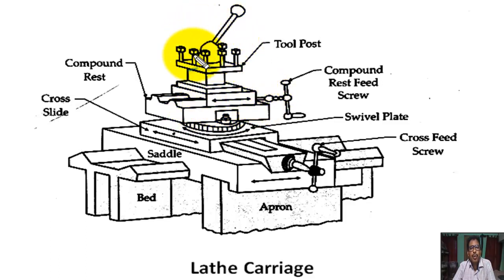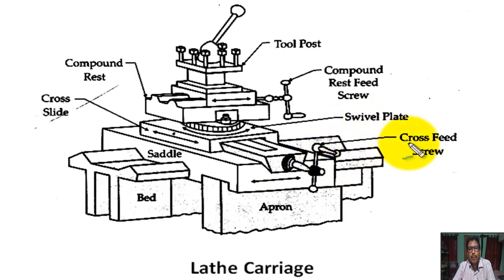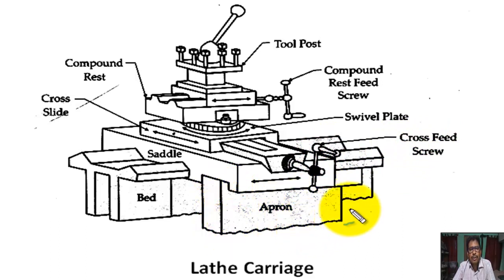This is called the tool post. This is the compound rest feed screw. This graduated plate is called the swivel plate. This is the cross feed screw. The hanging portion of the carriage is called the apron.